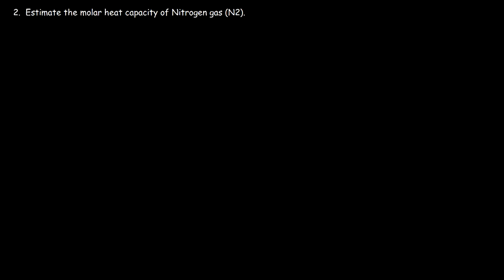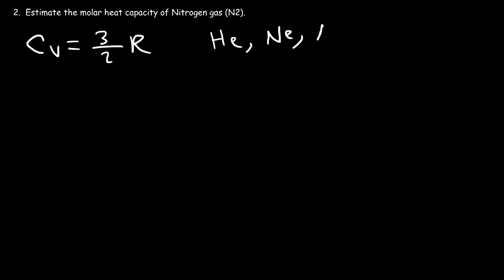Problem 2: estimate the molar heat capacity of nitrogen gas. Now we're dealing with a diatomic gas molecule. For a monoatomic gas, the molar heat capacity was (3/2)R. Monoatomic gases like helium, neon, and argon have 3 degrees of freedom.